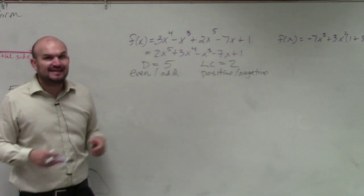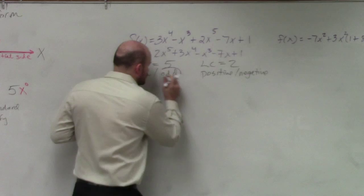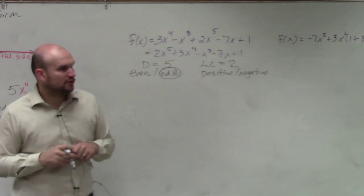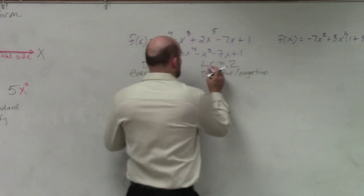So we look at the number 5. Is that even or is that odd? Odd. Odd. So circle it. Is my leading coefficient positive or negative? Positive. OK.